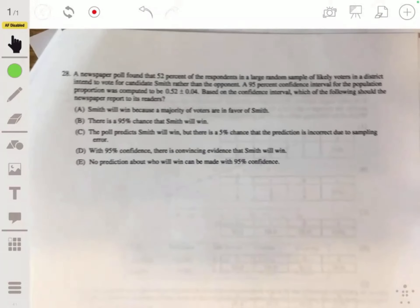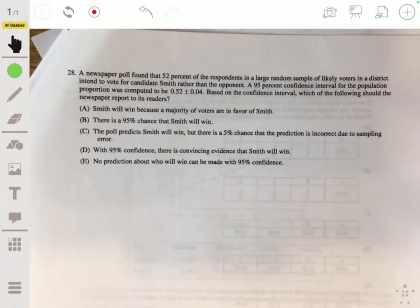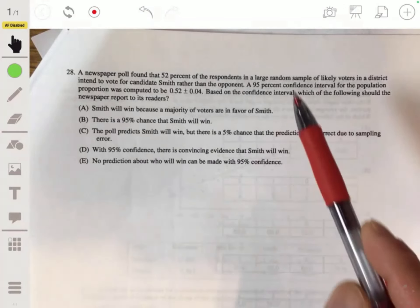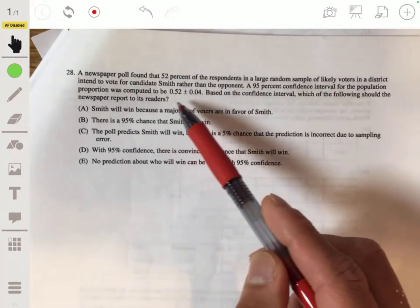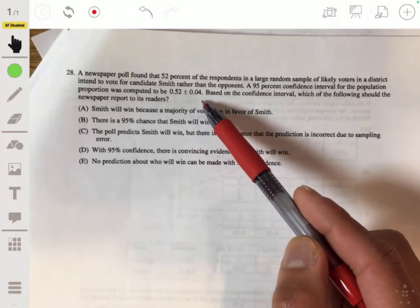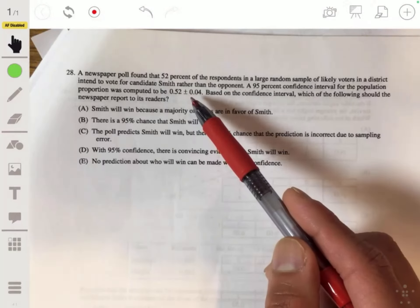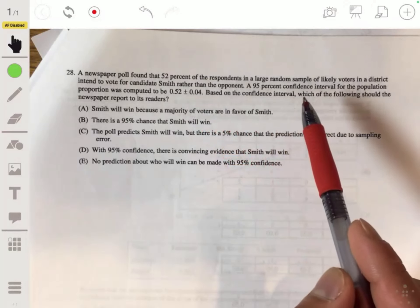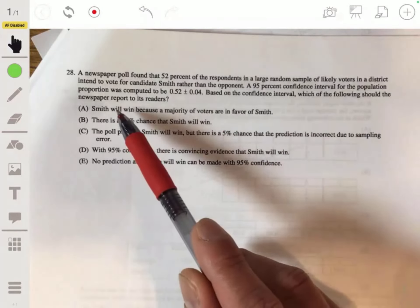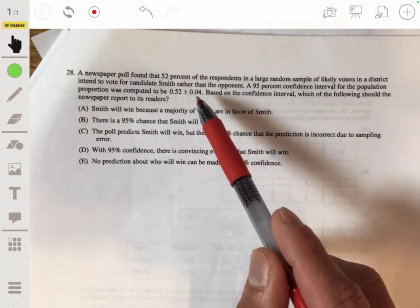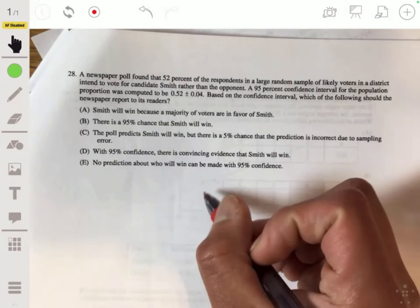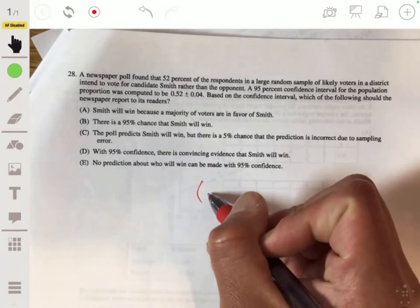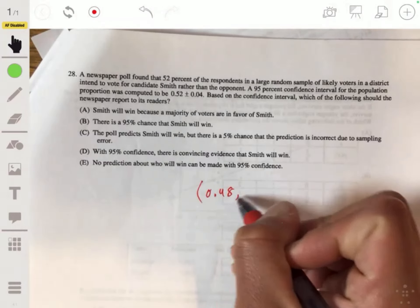28. A newspaper poll found that 52% of the respondents in a large random sample of likely voters in a district intend to vote for Kent Smith rather than the opponent. A 95% confidence interval for the population proportion was computed to be 0.52 plus or minus 0.04.